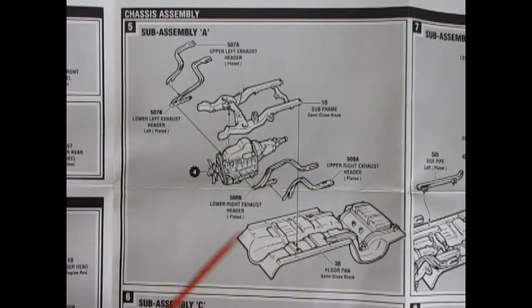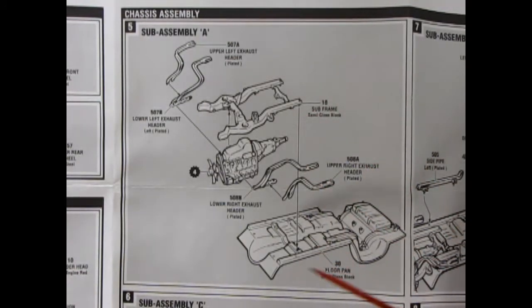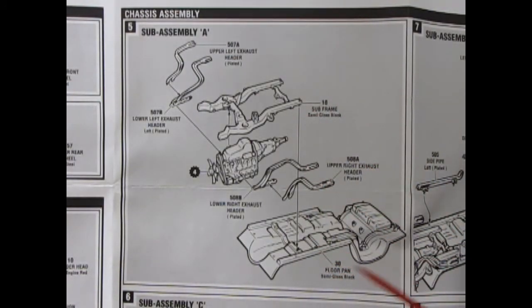Then you get your runners going on here. So, then, there's our sub-frame. Our engine pops into the sub-frame with these two-piece exhaust manifolds going on left and right sides. And then the whole sub-assembly will glue onto our floor pan sitting right here.